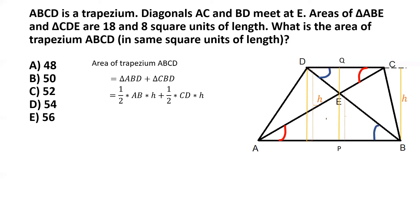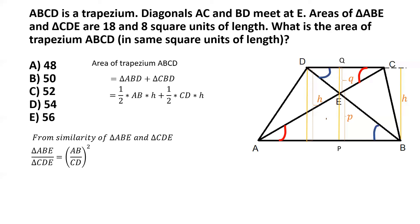From the similarity of triangles ABE and CDE, we know that the ratio of their areas equals the square of the ratio of their corresponding sides. Taking AB and CD as the corresponding sides, the ratio of area of triangle ABE to area of triangle CDE equals (AB/CD) squared.